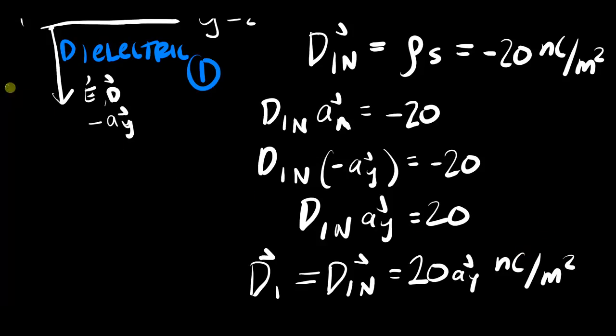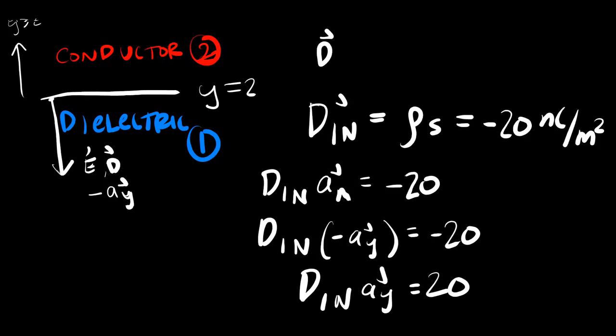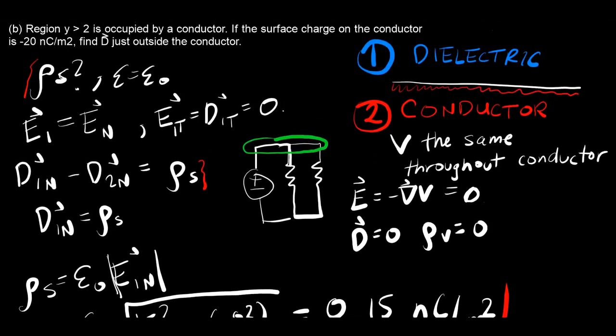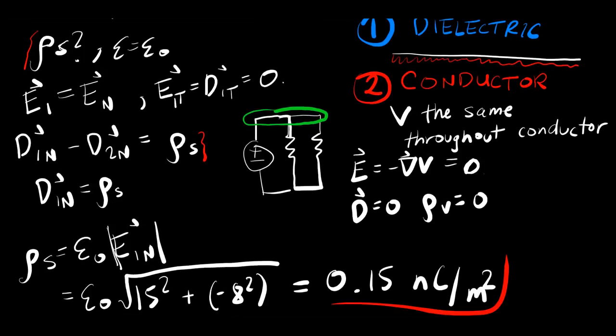And that's all there is to dealing with this kind of problem. Really, you just have to consider those important relationships that are unique to conductor-dielectric boundaries, which are: the potential is constant, the electric field is zero, the flux density is zero, and ρᵥ is zero inside the conductor, which means this relationship boils down to this.